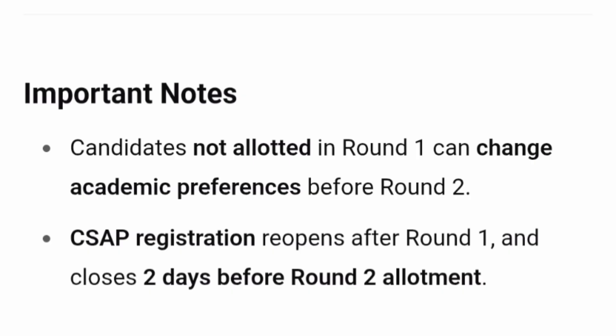Candidates not allotted in round one can change their academic preferences before round two. Only those students who were not allotted any seat in round one can do this. CSAP registration reopens after round one and closes two days before the round two allotment, so unallotted students should pay close attention to these timelines. Thanks for watching and please subscribe to the channel to get similar important updates.